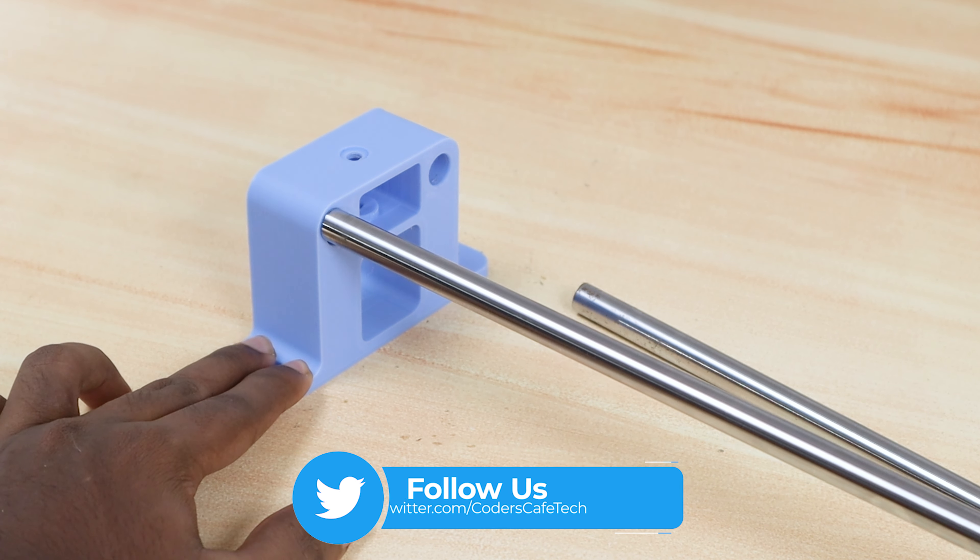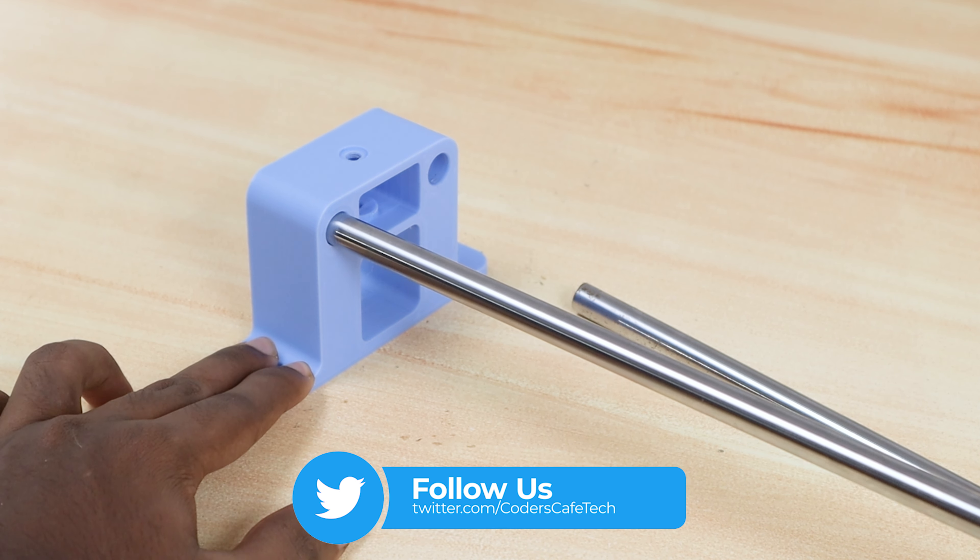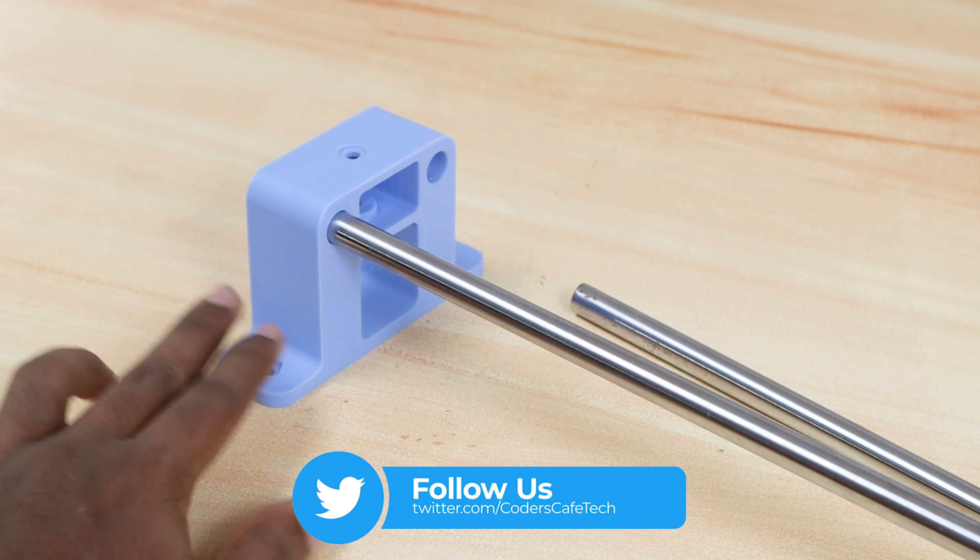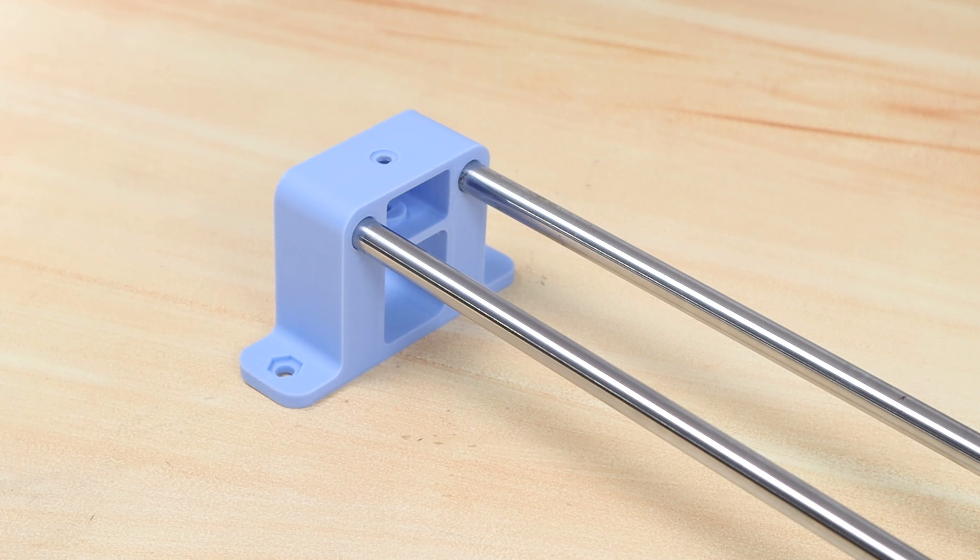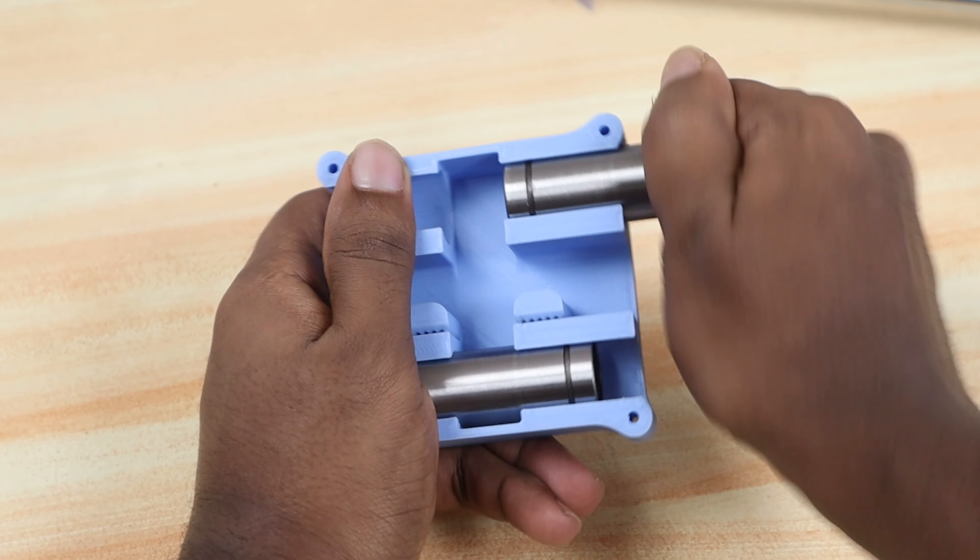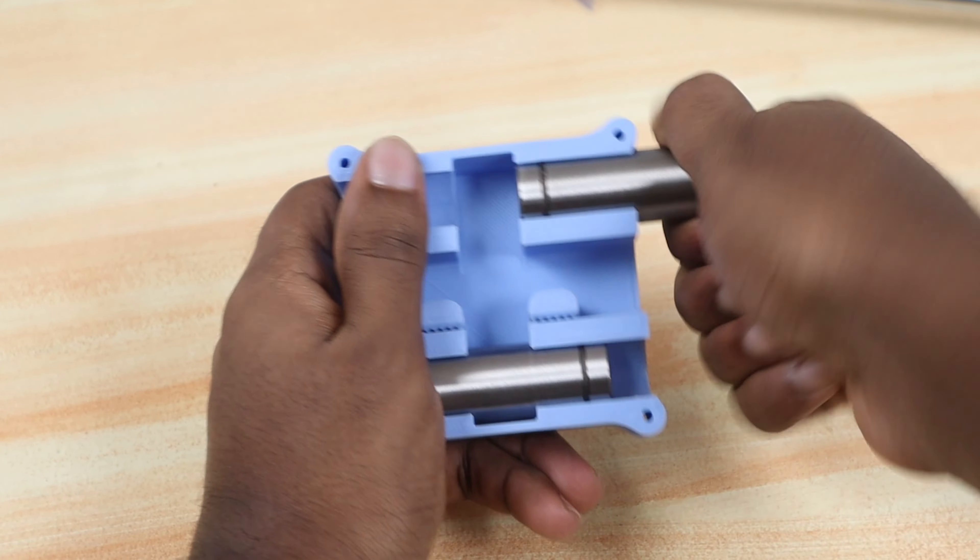So let's start assembling the machine. First, we inserted the 1m length linear rods into one of the holders. You can adjust the rod length according to your drawing area. Then, we inserted the 10mm linear ball bearing for the X axis sliding block.